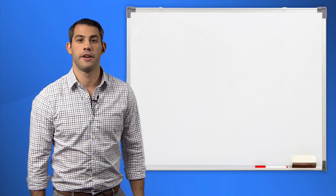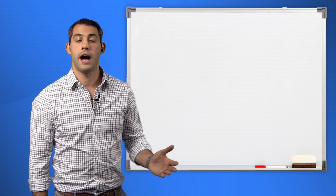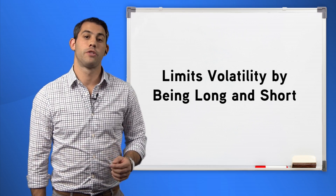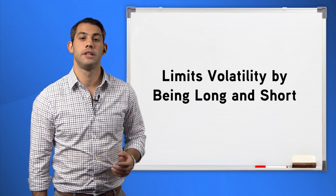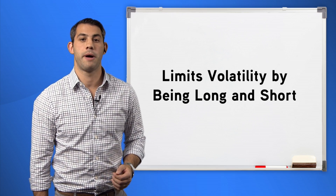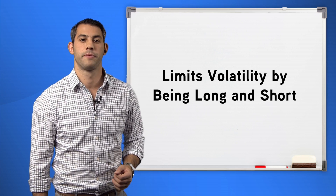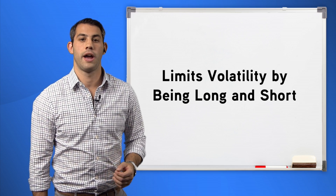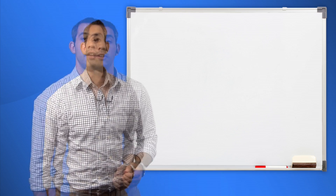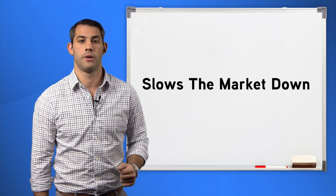An outright futures contract is more susceptible to this volatility, whether positive or negative, because it's one directional. A futures spread trade, though, limits the volatility because the long contract may be positive while the short contract may be negative, or vice versa. The net of the spread is less volatile than the outright futures contract. Essentially, a futures spread trade slows the markets down.